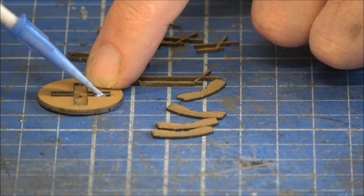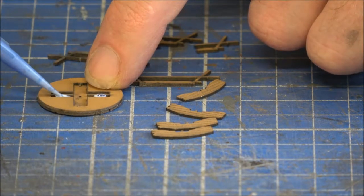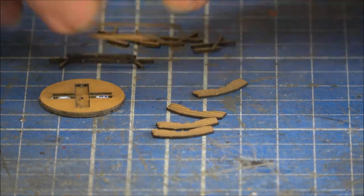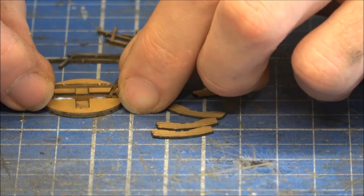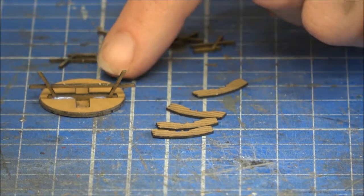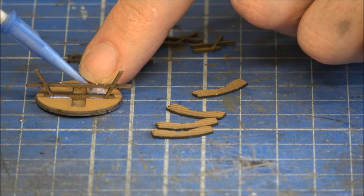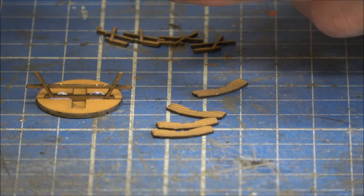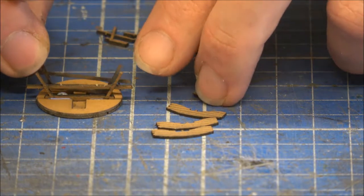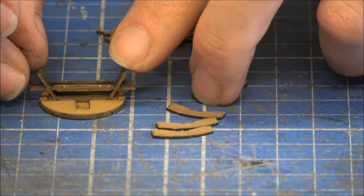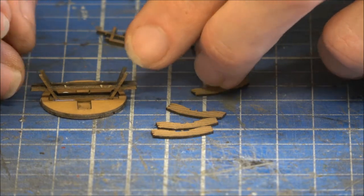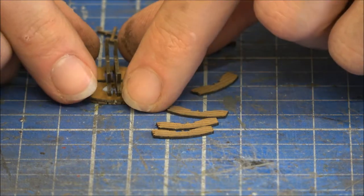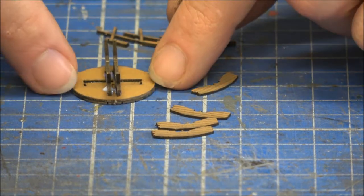So again, a little bit of glue will only go as far as the centre, because obviously we've got a sort of cross shape. Pop them in. Making sure that the little details that I've just mentioned are on the outside.